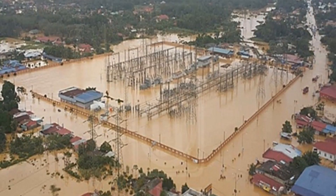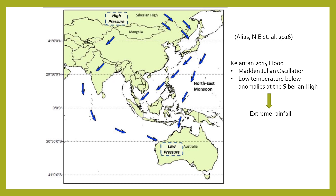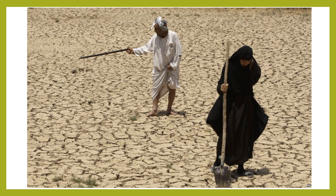This is Kelantan in 2014, which experienced the worst recorded flood on the east coast of Peninsular Malaysia. There was a Madden-Julian Oscillation at that time along with really low temperature anomalies at the Siberian High. Due to these conditions, the monsoon during that period was extremely intense, creating an extreme monsoon event.